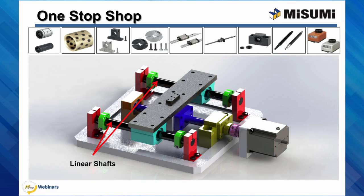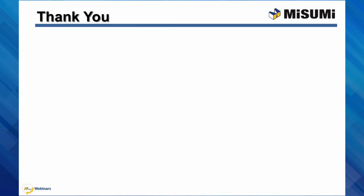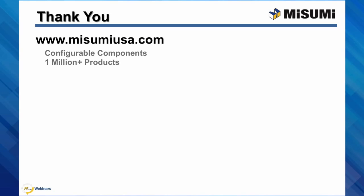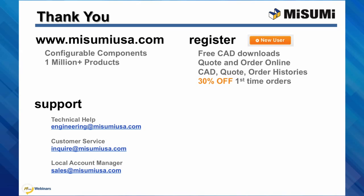Our last example shows a simple linear actuator assembly that is completely made up of Misumi components. We showcased our linear shafts in this presentation, but Misumi offers a wide range of supporting products such as bushings, shaft supports, collars, and many other components to complete your automation assembly needs. Thank you and we hope you enjoy today's webinar. All of Misumi's configurable components and 1 million products are available at www.misumiusa.com. If you are new to Misumi, register for access to CAD downloads, online formal quotes and orders, and manage all of your account histories. For first-time companies purchasing, you can receive 30% off. Full support is also available — technical help at engineering@misumiusa.com, customer service at inquiries, and your local account manager at sales.